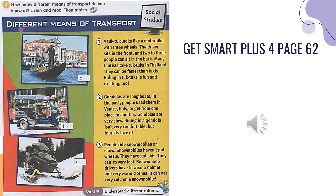Social studies: different means of transport. One — a tuk-tuk looks like a motorbike with three wheels. The driver sits in the front and two to three people can sit in the back. Many tourists take tuk-tuks in Thailand; they can be faster than taxis. Riding in tuk-tuks is fun and exciting too.